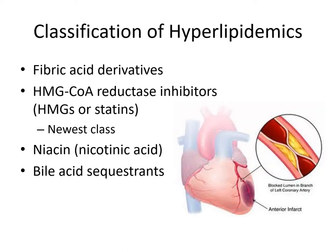There are four classifications of hyperlipidemic medications that lower fat, cholesterol, and lipids in the bloodstream: the fibric acid derivatives, the HMG-CoA reductase inhibitors — often referred to as statins — niacin or nicotinic acid, and bile acid sequestrants. It will be important to review these drugs, including their dosing and side effects, as this will be covered on your exam.